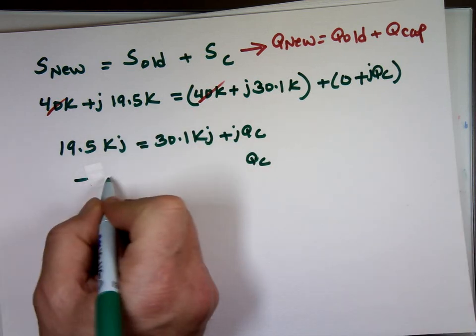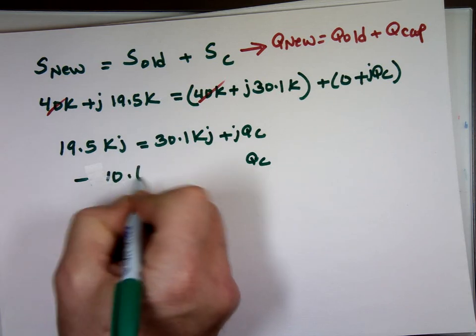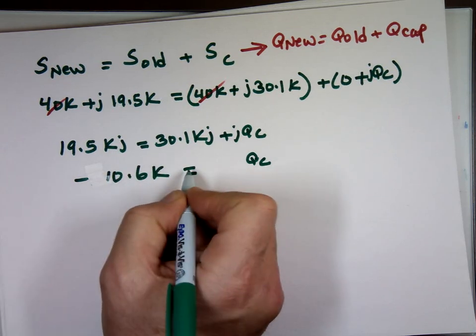So I'll just put the negative value. What's 19.5 minus? Minus what? 30.1, which is negative 10.6k. So QC is equal to the negative 10.6k? Correct. QC. QC, yeah. Yep. And now we need to find what's C.